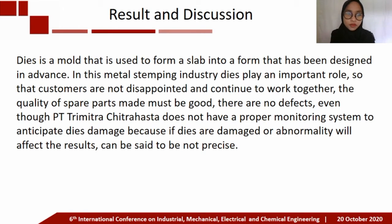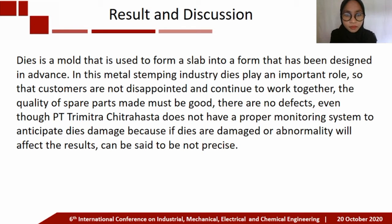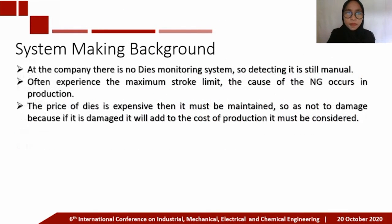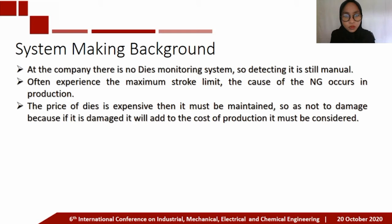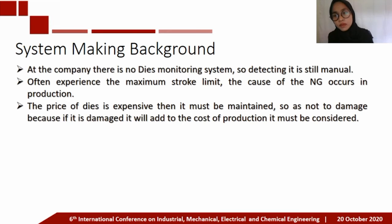There are no defects, even though PT Trimitra Citrahasra does not have a proper monitoring system to anticipate dice damage. If dice are damaged or show abnormality, the result can be imprecise. There is no dice monitoring system, so detection is still manual. The company often experiences exceeding the maximum stroke limit, causing additional costs in production. The price of dice is expensive and must be maintained to prevent damage, as damage will add to production costs.